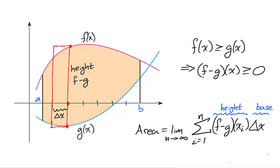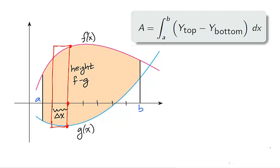We obtain the actual area of the shaded region by taking the limit as n approaches infinity. To summarize, when a function is above another function on an interval [a, b], the area is computed from the integral of the top function minus the bottom function.